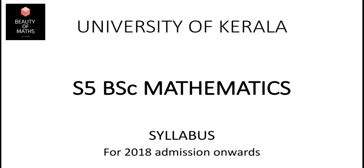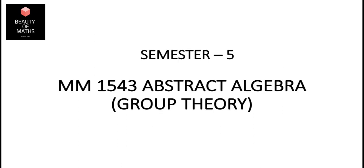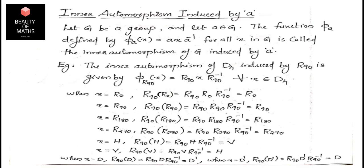Hi all, welcome to Beauty of Maths class. Let me discuss the abstract algebra material section on inner automorphism induced by a. Let G be a group and let a belong to G. The function φ_a defined by φ_a(x) = axa⁻¹ for all x in G is called the inner automorphism of G induced by a.